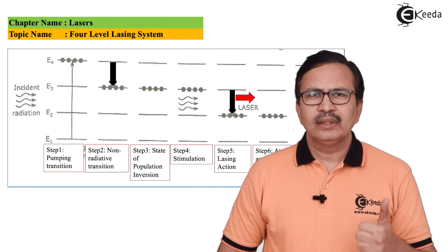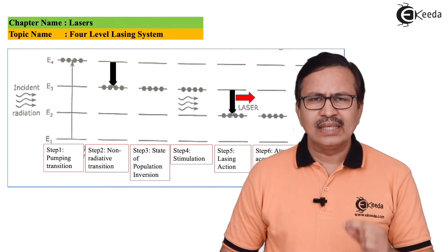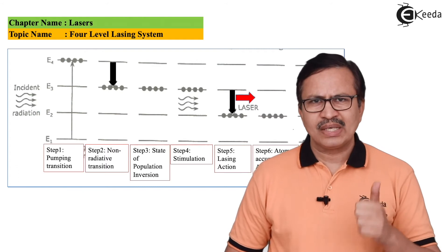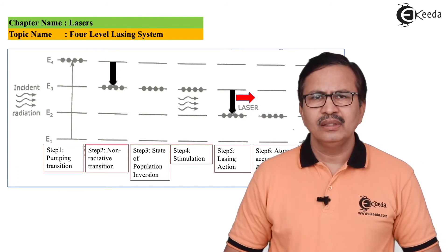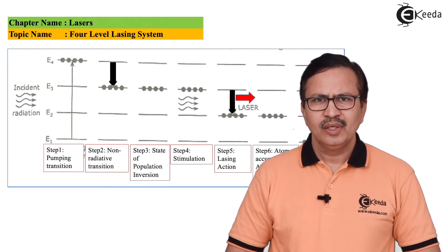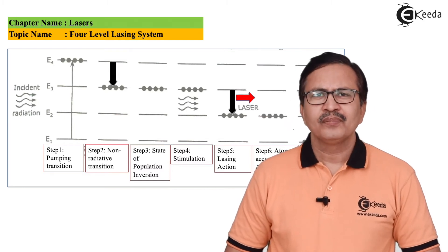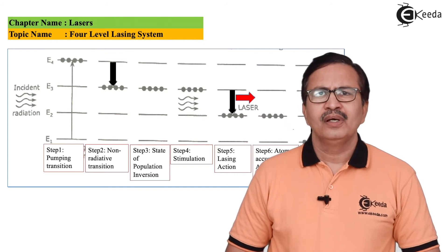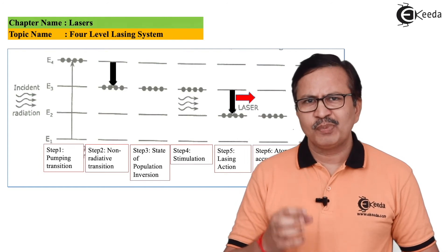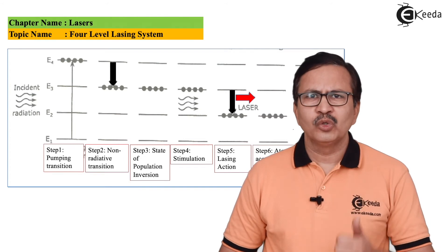Any random photon liberated earlier due to spontaneous emission will now trigger the transition of the excited atoms in the metastable state E3 to the metastable state E2. This is a lasing transition because all the photons are coherent and monochromatic, giving rise to a lasing action. A pack of photons — which we term as lasers — will be liberated, and these will be coherent and monochromatic.